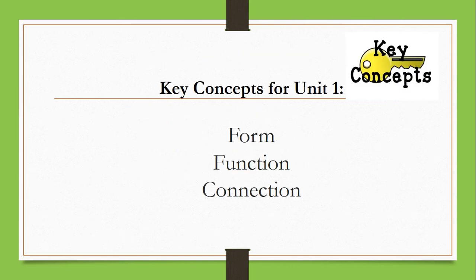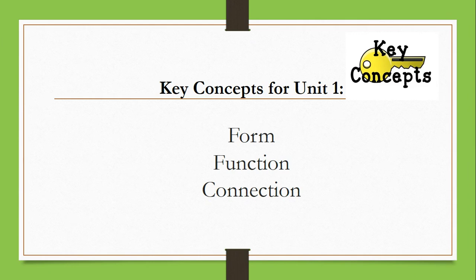For each line of inquiry and also for our central idea we're going to have certain key concepts that we're going to be focusing on. The first key concept is form — we're going to see what it looks like. Then we're going to go into function, which tells us how it works. Then we're going to see the connection. It's very important here to see the connection between the past and the present, and these key concepts are going to be focused on greatly for unit one.